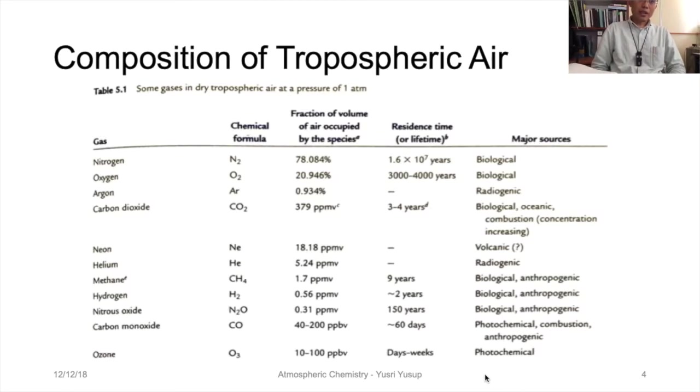The residence time of oxygen is very long, from 3,000 to 4,000 years. The source is biological. Then it's followed by argon, at about 1 percent of the atmosphere, and the source is radiogenic.